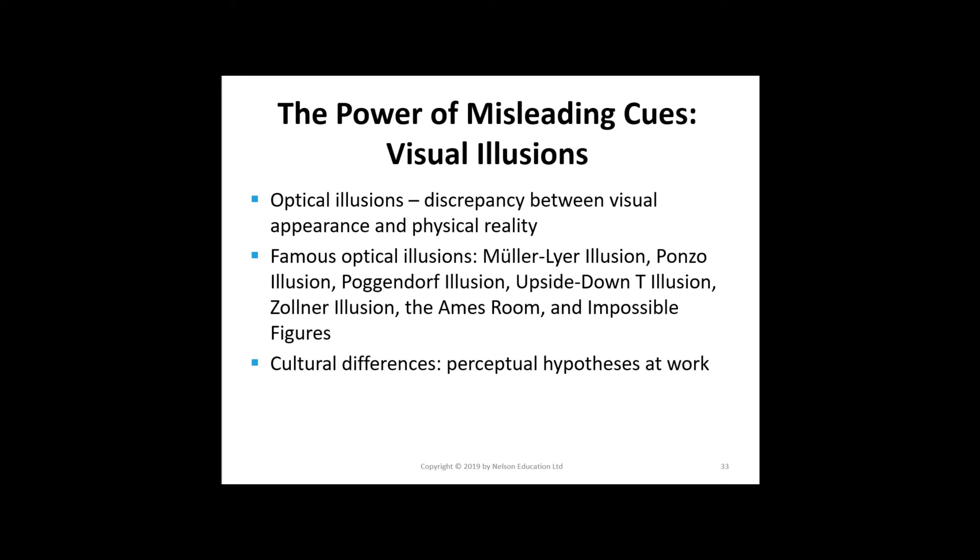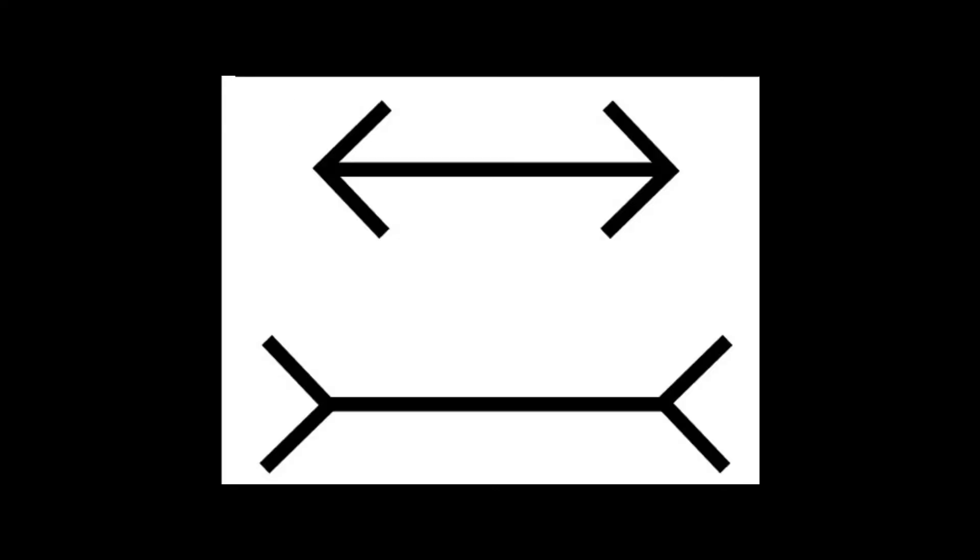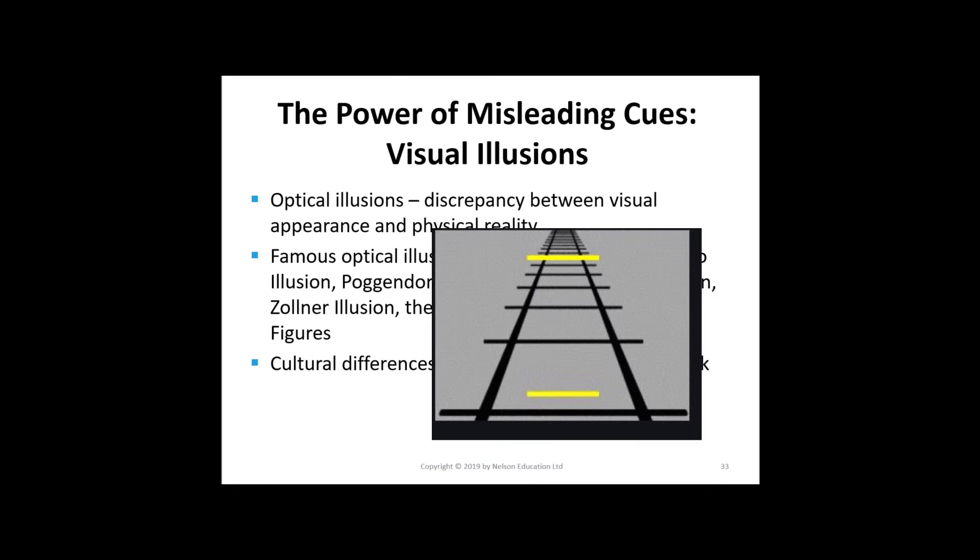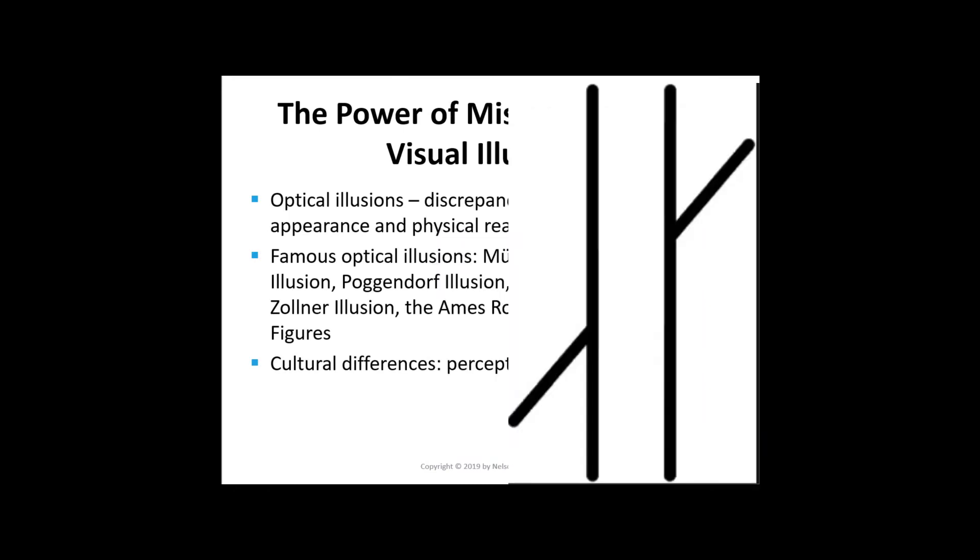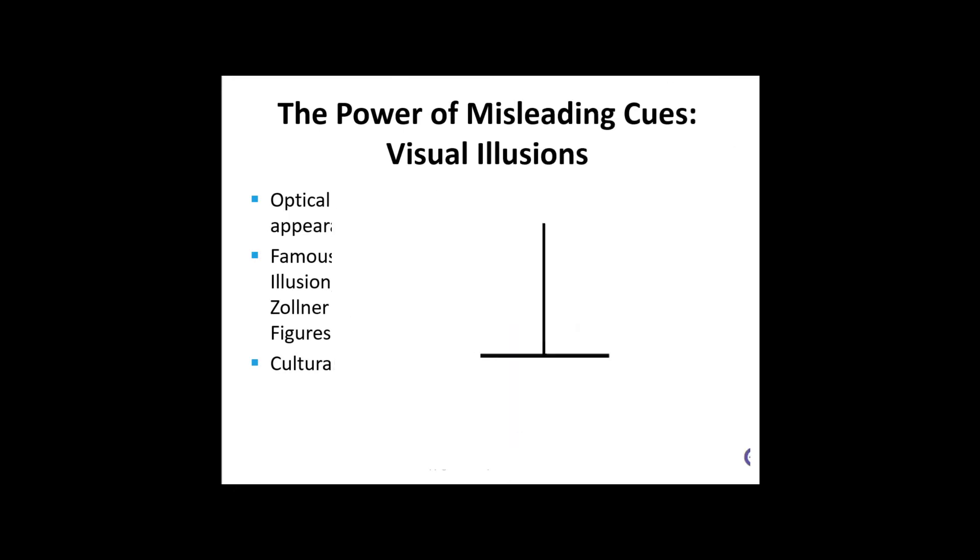Optical illusions involve an apparently inexplicable discrepancy between the appearance of a visual stimulus and its physical reality. Famous optical illusions include the Müller-Leyer illusion, the Ponzo illusion, the upside-down T illusion, the Zollner illusion, the Ames room, and impossible figures.